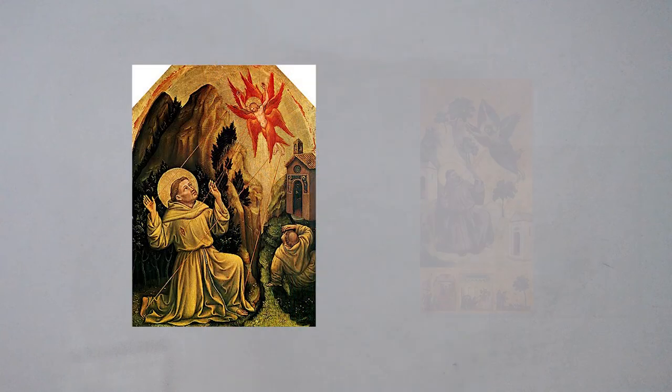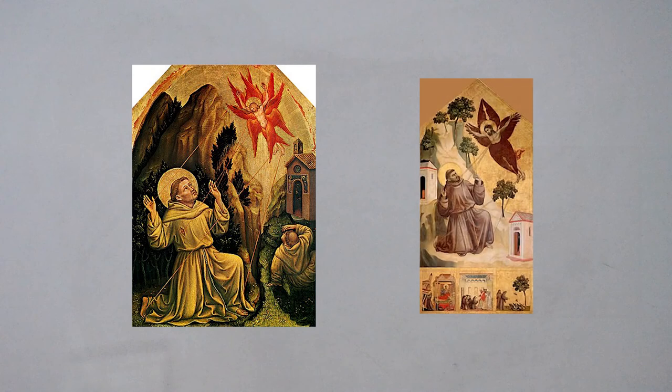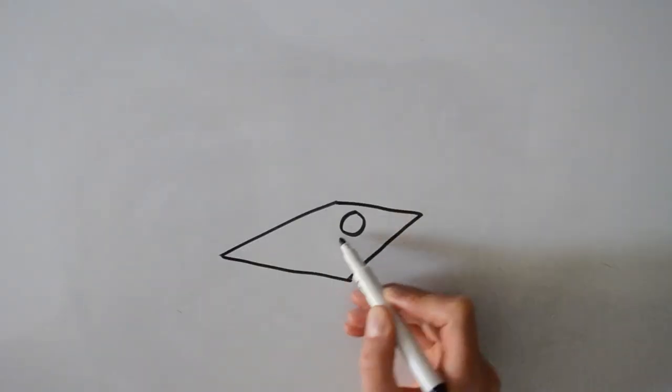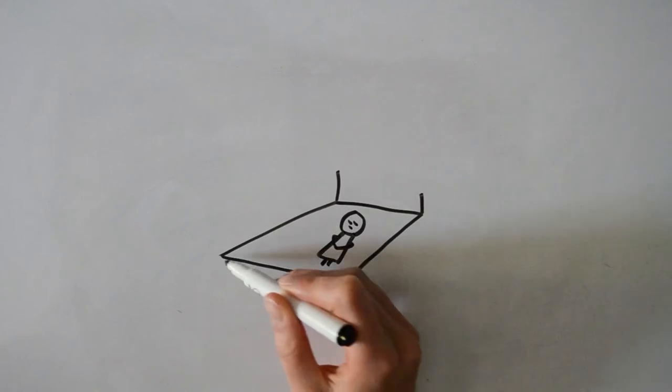His final years were filled with suffering. In a prayer to share in Christ's passion, Francis received the stigmata, the wounds that Christ experienced in his hands, his feet, and side. Francis felt ill after years of poverty and wandering, and began to go blind, during which time he wrote his Canticle of the Sun.